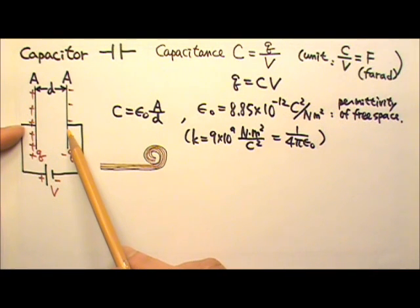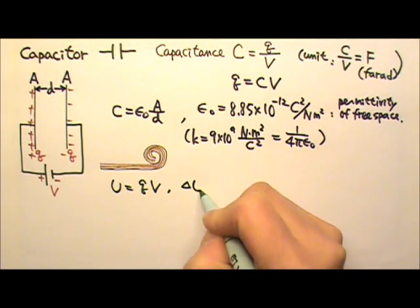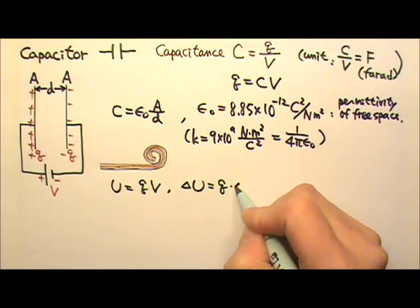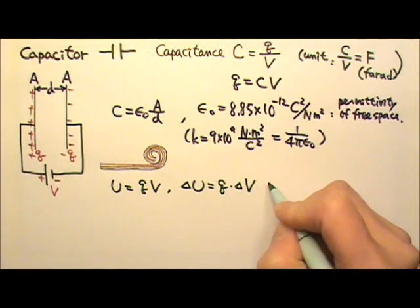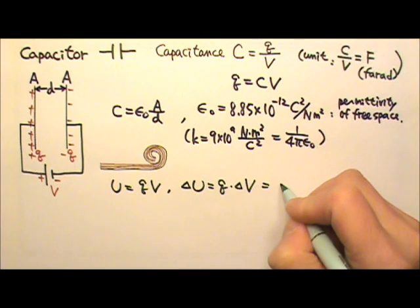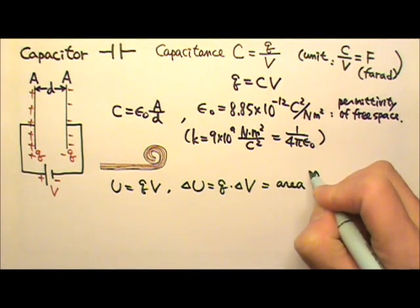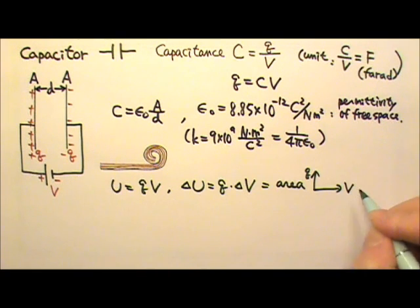Since U equals QV, delta U would equal Q times delta V. So this is like height times the base. That means this will be the area of a charge versus voltage graph.